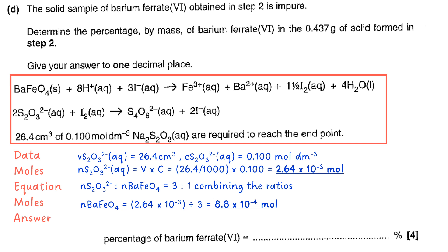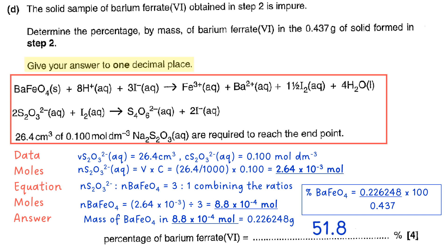So that means we take the 2.64 times 10 to the minus 3 and divide it by 3, giving us 8.8 times 10 to the minus 4 is the number of moles of barium ferrate(VI) that's been made. To work out the mass we need to calculate the MR which is 257.1 grams per mole. So that means the mass that that equates to is 0.226248 grams, which we then divide by our impure solid mass to get 51.8%.